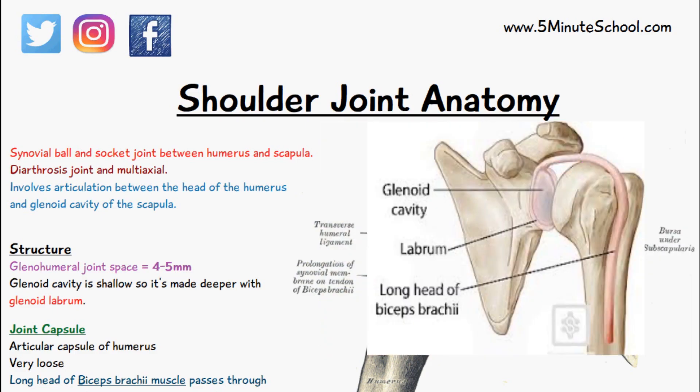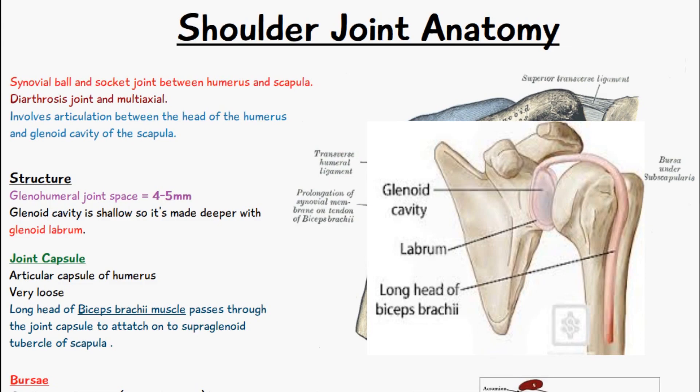The glenoid cavity of the scapula is quite shallow, so it's made deeper with something known as a glenoid labrum, which is basically like a ring of fibrous tissue that surrounds the glenoid cavity. What this does is when the head of the humerus attaches, it basically gives about 45 millimeters of space.